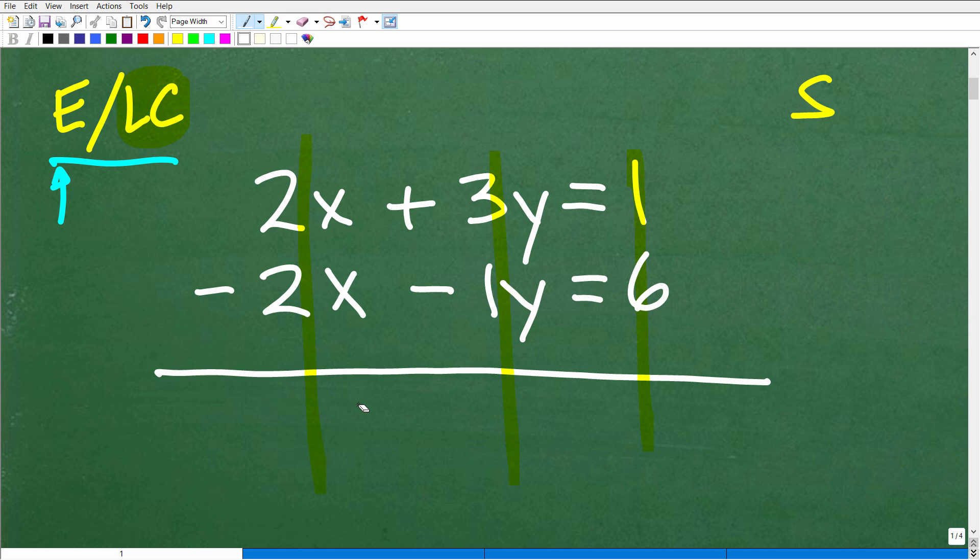So 2X plus a negative 2X is zero. So the X variable goes away. But here we're left with what? 3Y plus a negative 1Y, so that gives us 2Y here, is equal to 1 plus 6, of course, is 7. So now I have one equation. I had eliminated the X variable very easily.